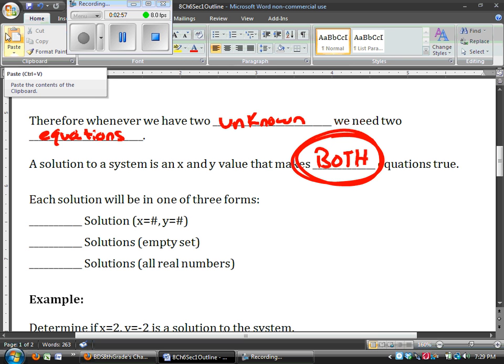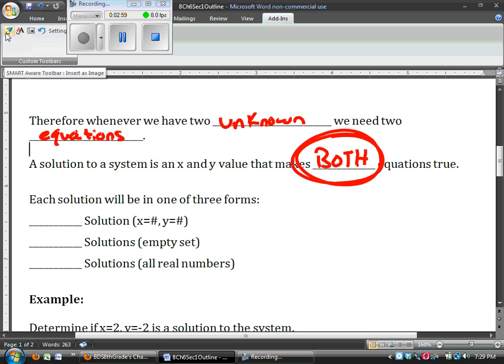Each solution that we find is going to be in one of three forms. We can have one single solution, which is x equals a number, like 3, and y equals a number, like 5. We could have no solutions, which is the empty set, zero with the line through it. Or we can have infinite solutions, which is all real numbers.